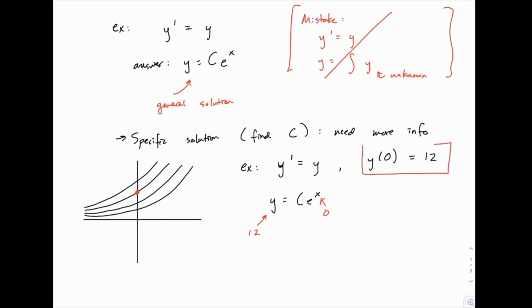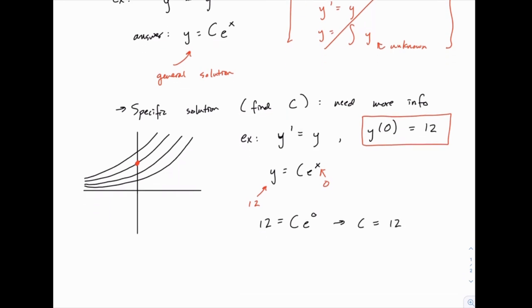But then we can find that value of c by plugging in the initial condition. So we can plug in 0 for x and we can plug in 12 for y. Because what this initial condition gives us is a connection between one x and y value. When x equals zero, y equals 12. So we can plug in those values. And we'll have 12 = ce^0. e^0 is simply one. So we figured out that 12 = c. Which means our specific solution would be y = 12e^x.